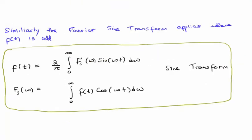A very similar argument can be performed for the Fourier sine transform, where the initial input function f of t is an odd function. Note that here I've placed the entire two over pi scaling term on the inverse transform, just for variety.